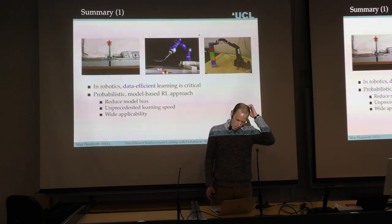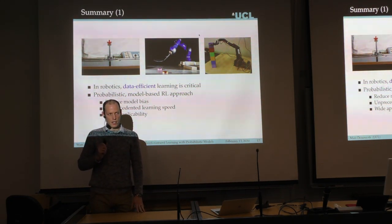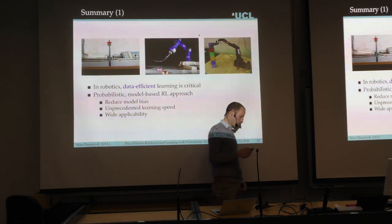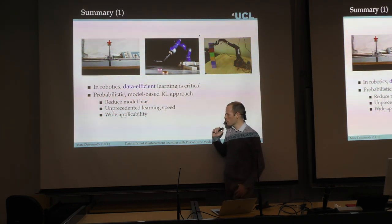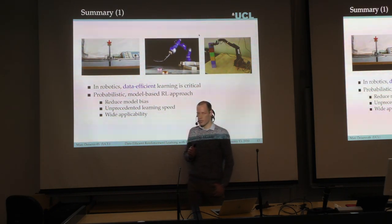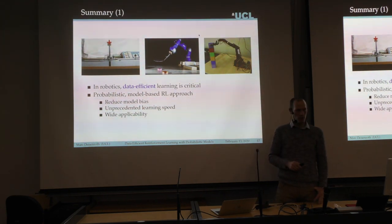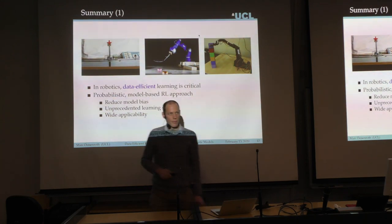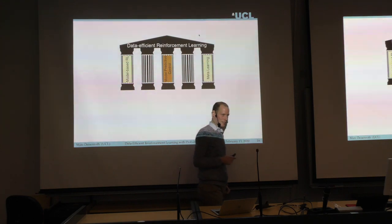To summarize this first part: data-efficient learning in robotics is important. I presented a probabilistic model-based reinforcement learning approach which reduces model bias, gives us an unprecedented learning speed, and is widely applicable to a range of different robotic problems. I'll now continue to the second part of the talk — the other parts are a bit shorter than this one.